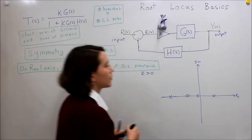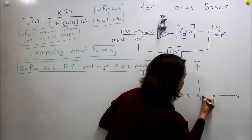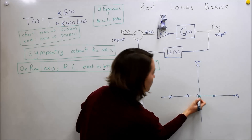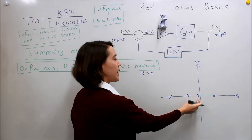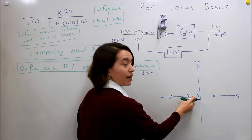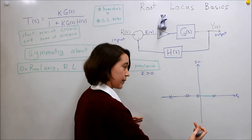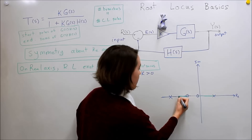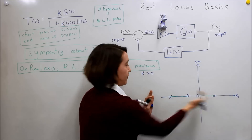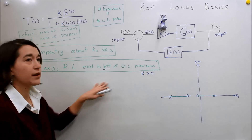Moving from this side: there is one pole or zero, which is an odd number, so the root locus must exist on this side — from here until we hit our second pole or zero. Now there are two, which is an even number, so it doesn't exist on this side — no root locus path here. The third one is an odd number, so it exists on this side until we hit the next pole. Over here there are four to the right, so the root locus does not exist there. That's how you figure it out.